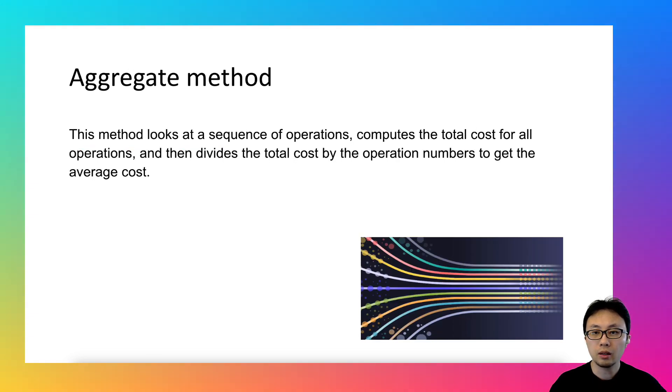The aggregate method is one way to measure the average cost of a sequence of operations. This method achieves the goal by adding up the total cost of a sequence of operations. After that, it divides the total cost by the operation numbers.